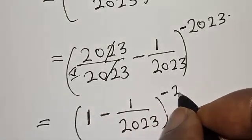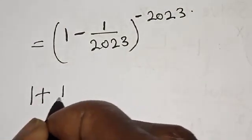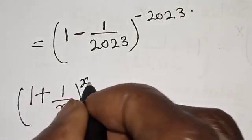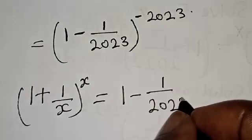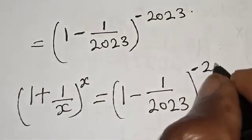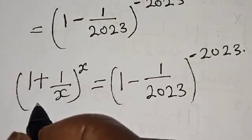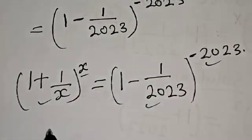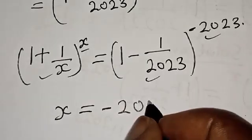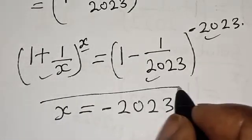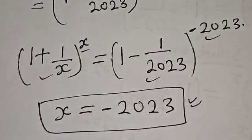So we now have (1 + 1/x)^x = (1 - 1/2023)^(-2023). Comparing the left hand side to the right hand side, the structures match when x = -2023. Therefore x = -2023 is our final answer. If you enjoyed the class, please don't forget to like, share, comment, and subscribe. Thank you.